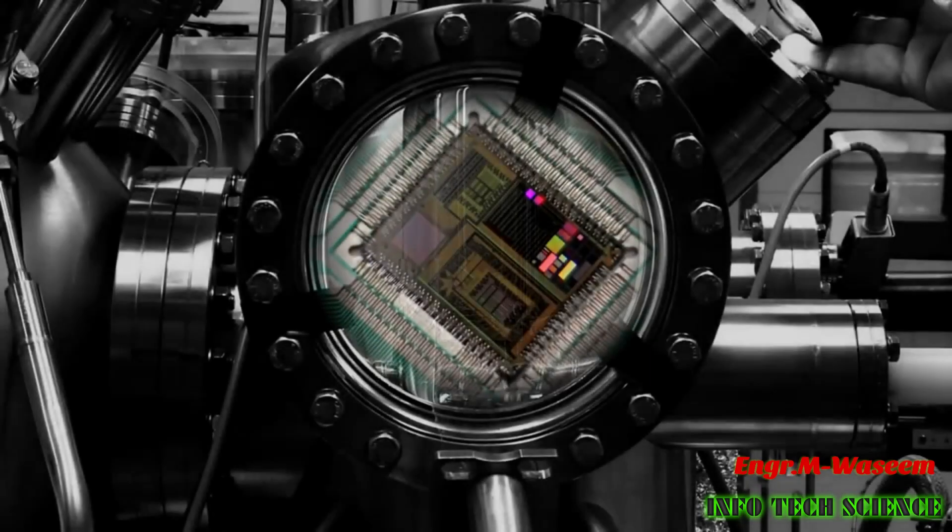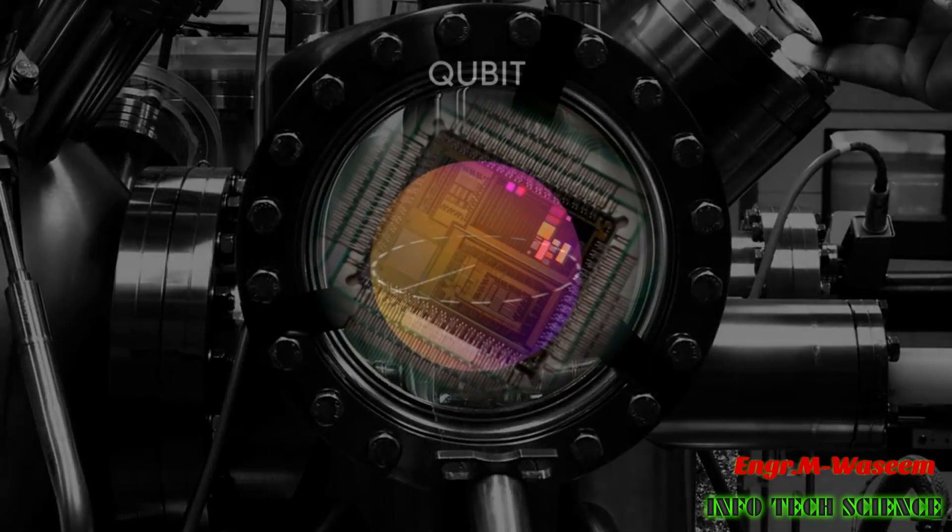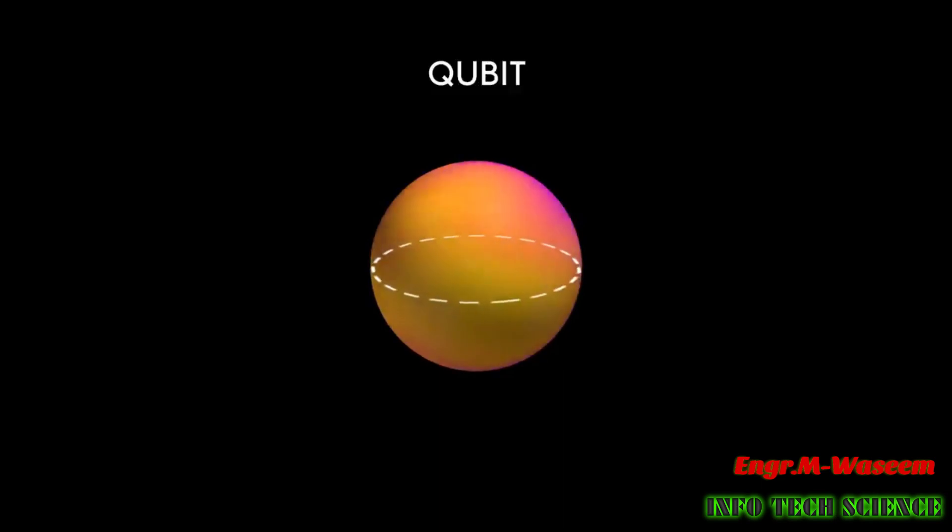A classical processor uses bits to perform its operations. A quantum computer uses qubits to run multidimensional quantum algorithms.